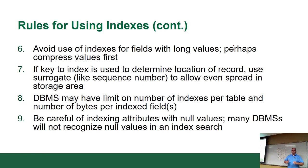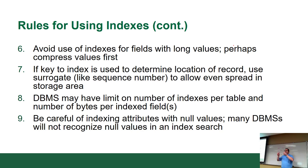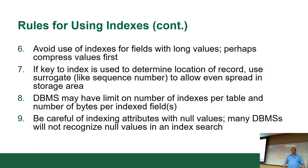Avoid using indexes on fields with long values — you may want to compress these values first. If you're talking about fields with really long values, like a personal biography on a website, don't index that. You're wasting space and nobody's going to search on it anyway. If you really need to index that kind of content, create a hash of some sort, or create a compressed version of the field — strip out common words like 'and,' 'or,' 'not,' 'it.' Just find the uncommon words that aren't in every sentence.